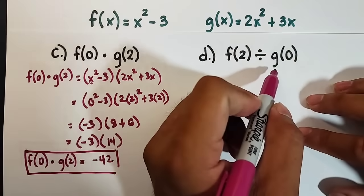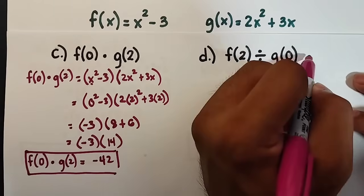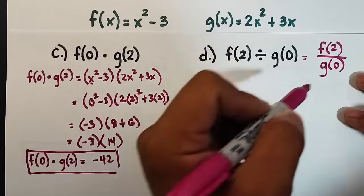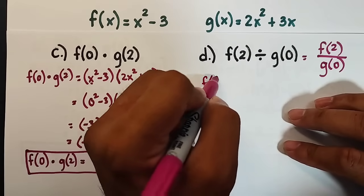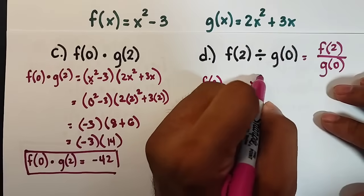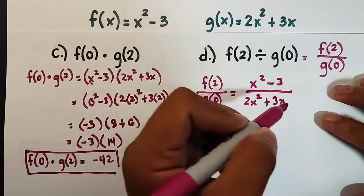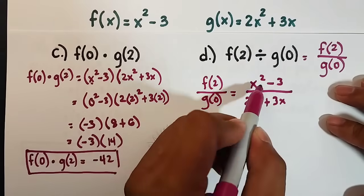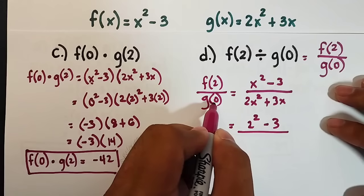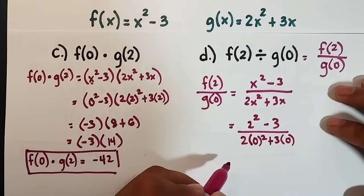Here, f(2) divided by g(0). Another way to write this is f(2) over g(0). So what we need to do is copy your f(x) here, x² - 3, over your g function, 2x² + 3x. So what we need to do is plug in the inputs here. It will become 2² - 3 over, for the g function, this is 2(0²) + 3(0).